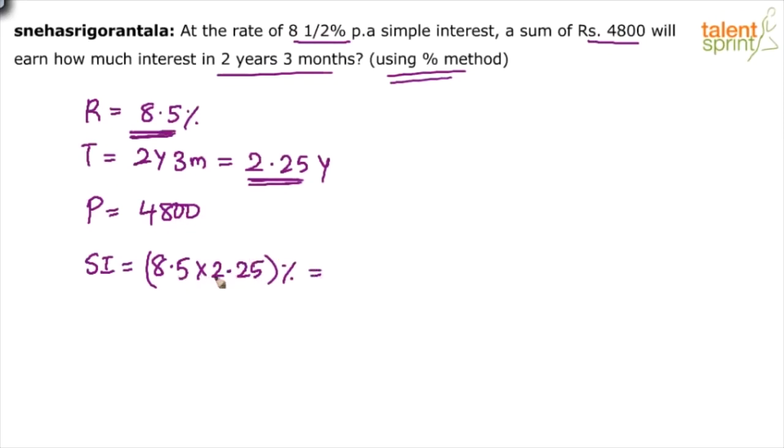8.5 into 2. 8.5 into 2 is 17. 8.5 into 0.25. So, that will be 2.5 by 4 is 0.125. So, 17 plus 2, 19, 19 plus 0.125, 19.125 percentage. That's it. So, simple interest is 19.125 percentage.